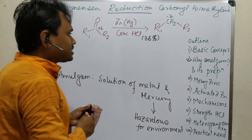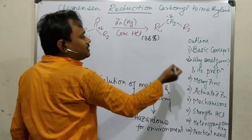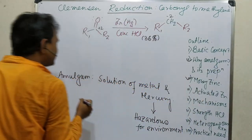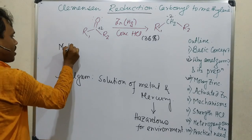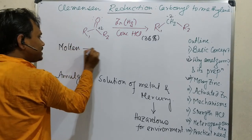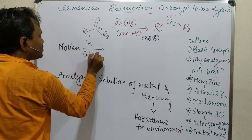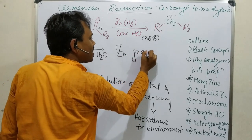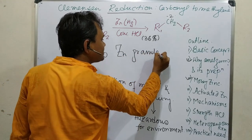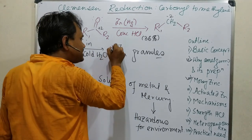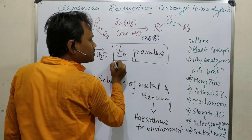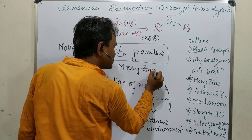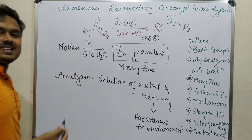If you want to prepare this amalgam, you should know the term mossy zinc. Mossy zinc is produced by pouring molten zinc into cold water — it produces zinc granules. This is called mossy zinc.